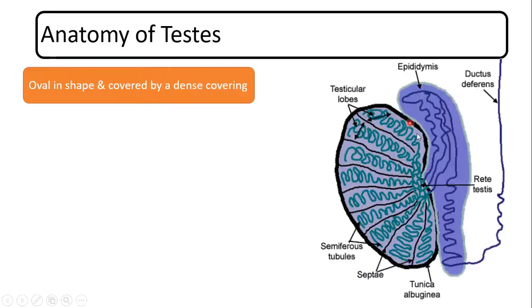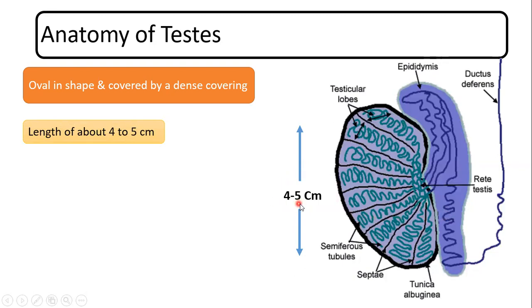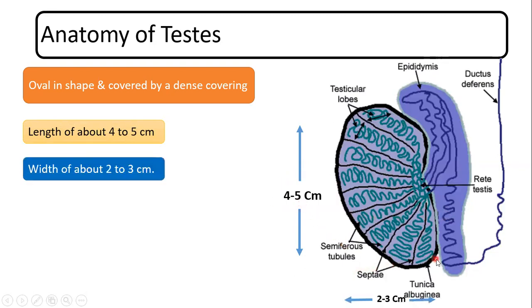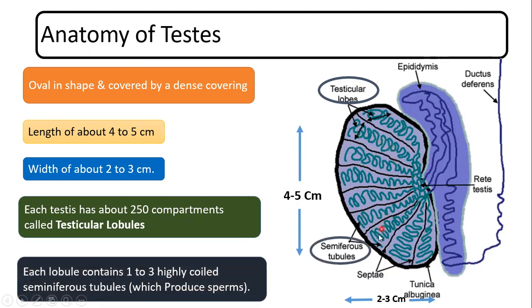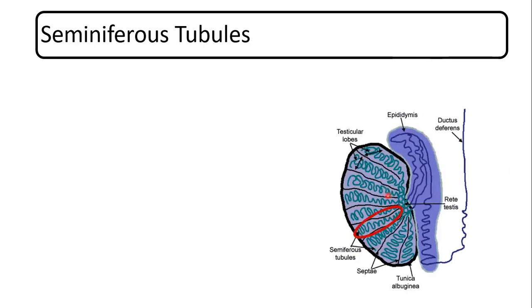The testes are oval-shaped organs with a length of nearly 4 to 5 centimeters and a width of 2 to 3 centimeters. The testes contain small compartments known as testicular lobules — nearly about 250 testicular lobules are present in each testis. Within every lobule, you will find a highly coiled structure; these are named seminiferous tubules. One to three seminiferous tubules are present in each testicular lobule.